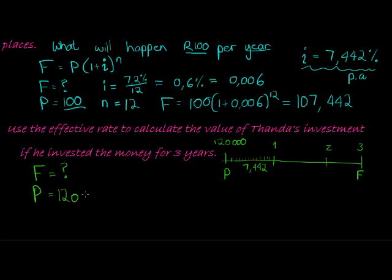i is 7.442 divided by 100, which gives me 0.07442, and finally n is now equal to 3.